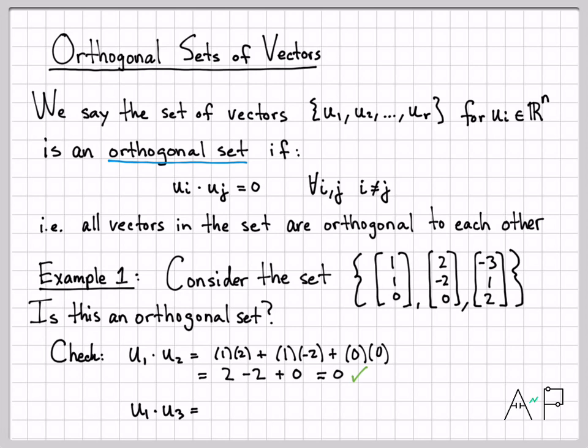What about u1·u3? Well, again, I'm going to multiply out each coordinate. That's just the definition of the dot product. So 1 times -3 plus 1 times 1 plus 0 times 2. And I get -3 + 1 + 0 equals not 0, right? -3 + 1 is -2. I get a number that's not 0. So vectors u1 and u3 are not orthogonal to each other. So that breaks my definition of an orthogonal set. This is not an orthogonal set. So the answer to this question is no.